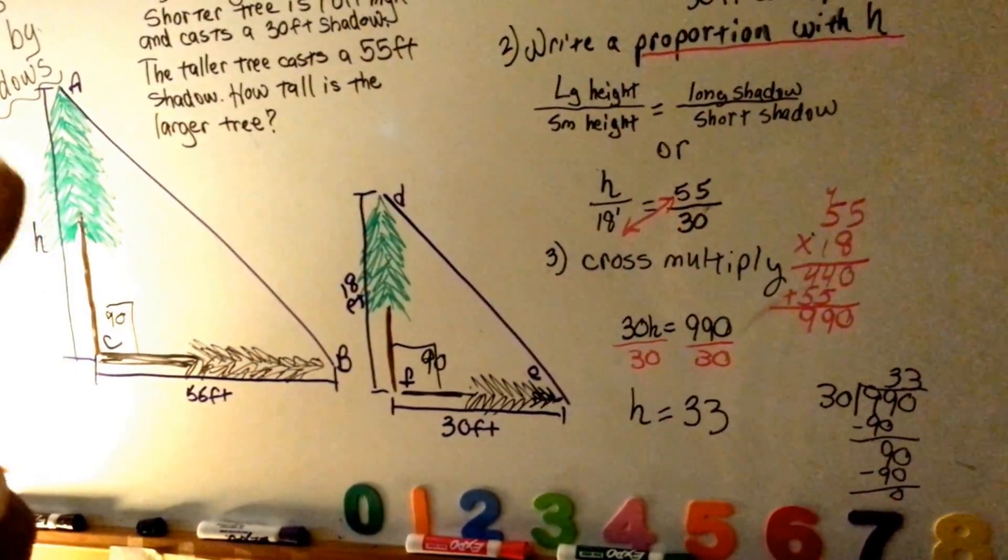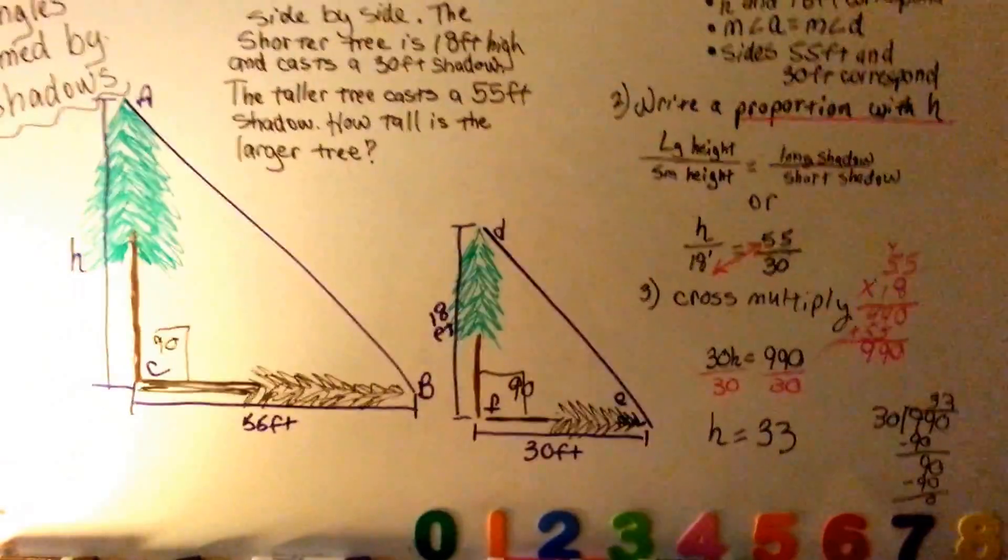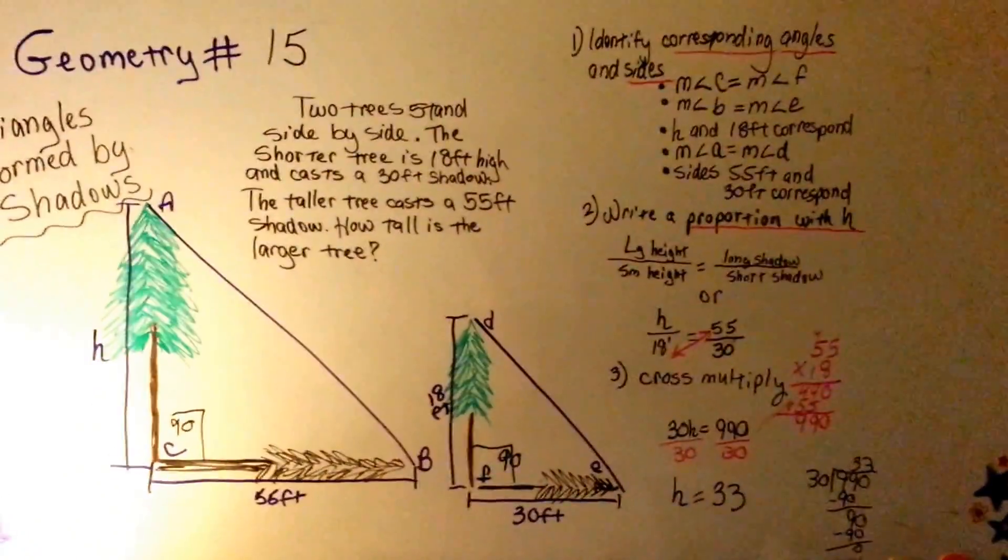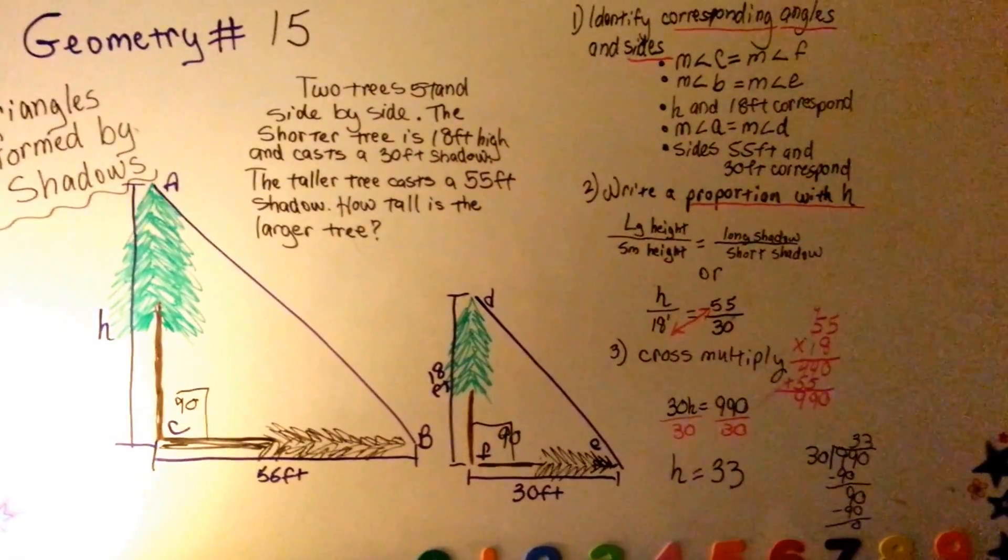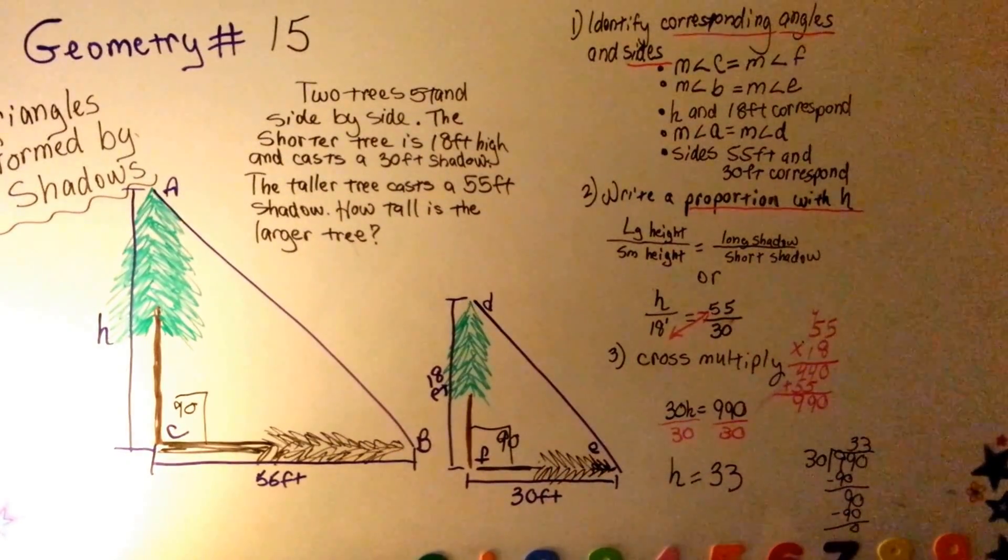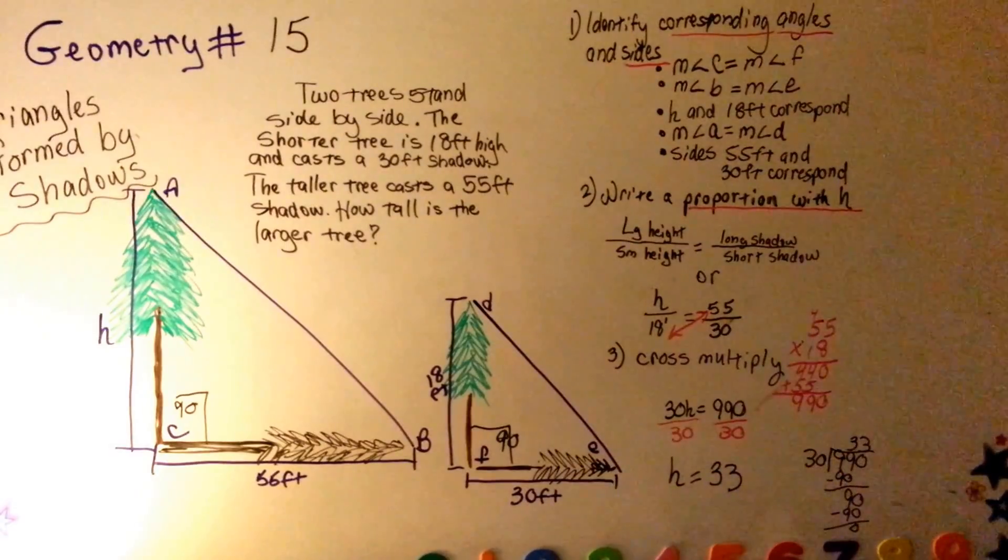So we know the height of this tree is 33 feet. So we were able to use corresponding angles and sides to help us solve how tall that tree was. And the shadows helped us. You can do this. It's not that hard. If you have a shadow problem in your book, try doing this.